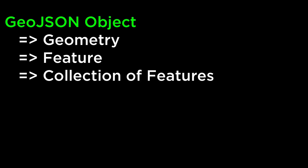GeoJSON Object. The GeoJSON object always consists of a single object. This object represents either a geometry, a feature, or a collection of features. A collection of features has one or more features. A feature has one or more geometries. A geometry is where we find the point, line, and/or polygon.